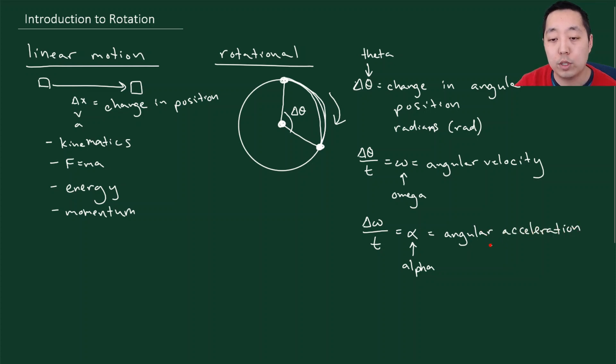Should also talk about units here. Angular velocity is measured in radians per second. And angular acceleration is measured in radians per second squared. So just like in linear motion, where you have meters, meters per second, meters per second squared, we got radians, radians per second, radians per second squared.